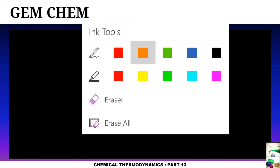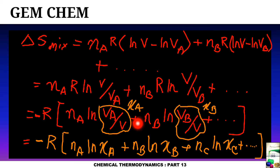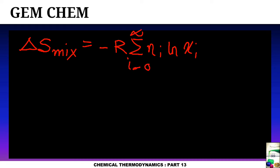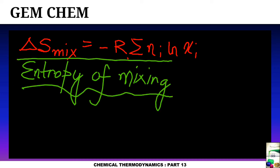Including the continuation for component C: n_C·ln X_C, and so on. This can be written compactly using summation notation. So the final result is: ΔS_mix = −R · Σ N_i · ln X_i, where the summation runs over all components i. This is the general formula for entropy of mixing.